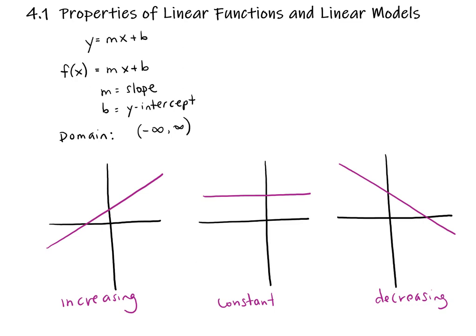When we talk about increasing, constant, and decreasing functions, we're talking about going from left to right on the function along the x-axis. A function is increasing when the slope is positive, constant when the slope is zero, and decreasing when the slope is negative.